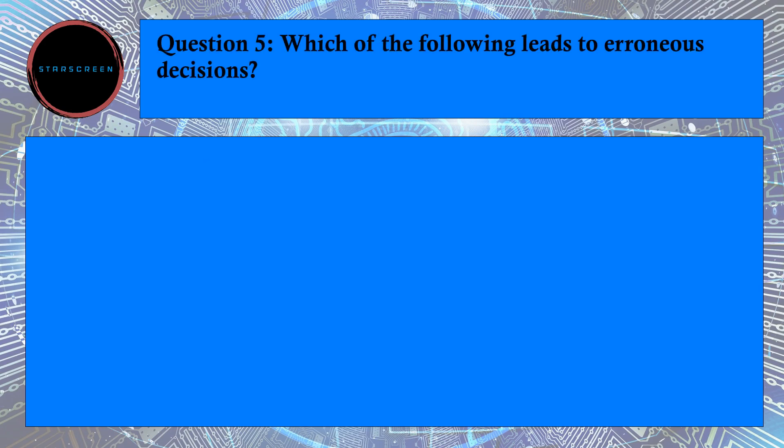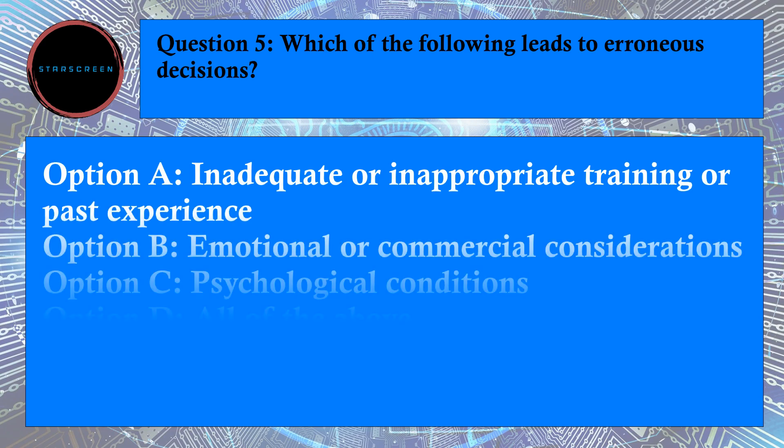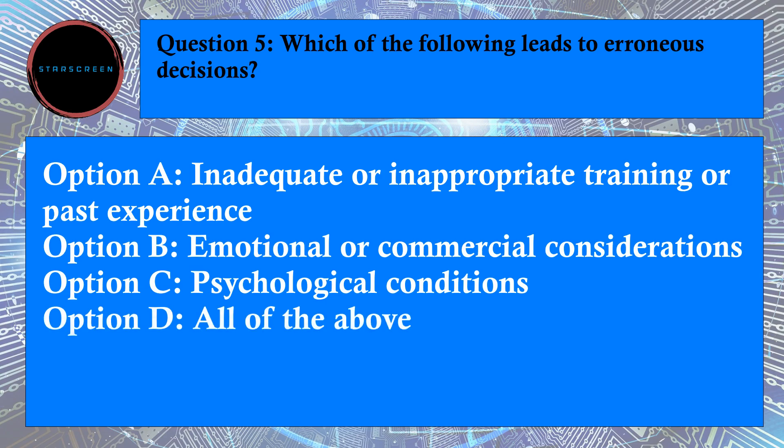Question number 5: Which of the following leads to erroneous decisions? Option A, Inadequate or Inappropriate Training or Past Experience, Option B, Emotional or Commercial Considerations, Option C, Psychological Conditions, and Option D, All of the Above. Correct answer is D, All of the Above. For answer, refer to ICAO Document 9683, Paragraph number 4.4.2.